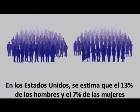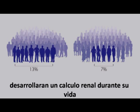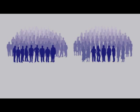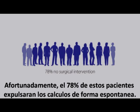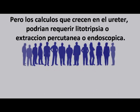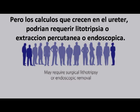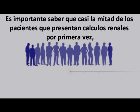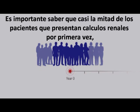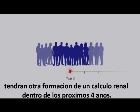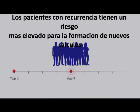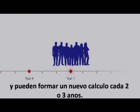In the U.S., it is estimated that 13% of men and 7% of women will develop a kidney stone during their lifetime. Fortunately, in about 78% of these patients, stones will be expelled spontaneously. But stones that become lodged in the ureter may require lithotripsy, or percutaneous or endoscopic removal. It's important to note that nearly half of all first-time stone formers will have another stone episode within the next 4 years. Recurrent stone formers are at even greater risk and may form a new stone every 2 or 3 years.